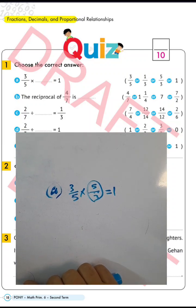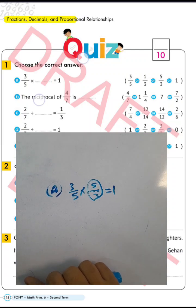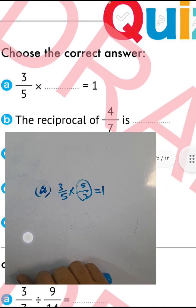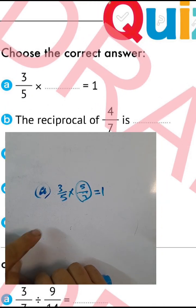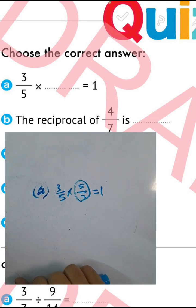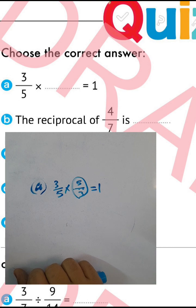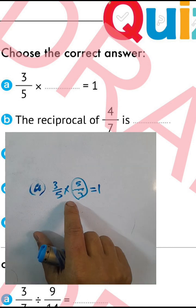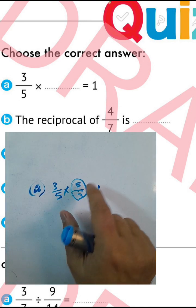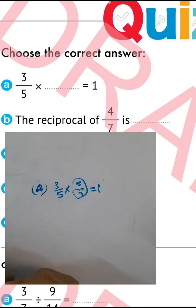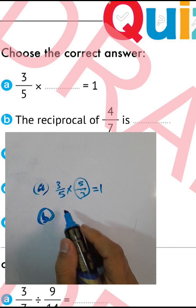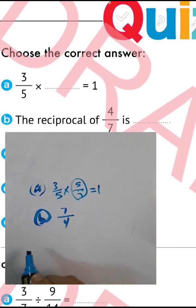Quiz from book number one. Silver five times what equals one? The reciprocal of five is one over five. The reciprocal of three over five will be five over three. We call the reciprocal the inverse. Which is letter B: the reciprocal of four over seven is seven over four.